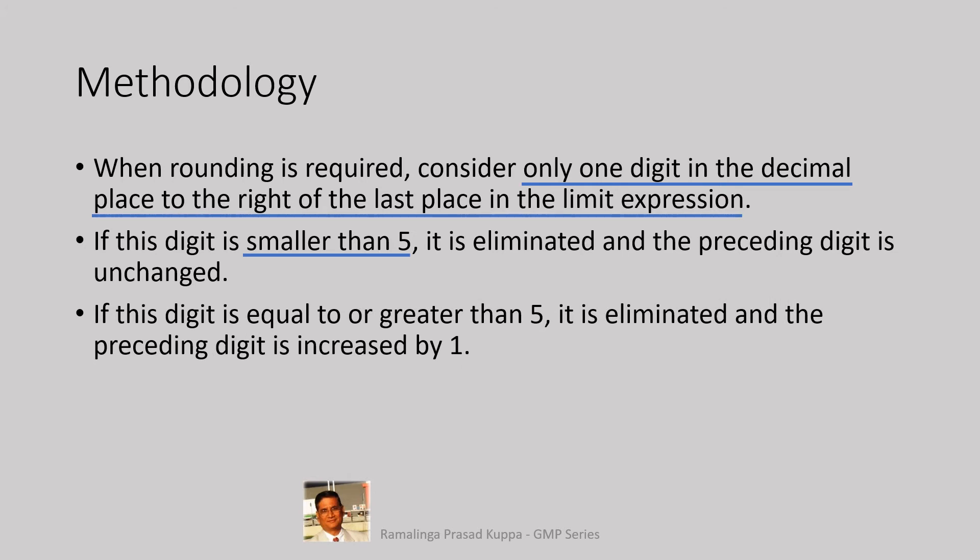If the digit is equal to or greater than 5, it is eliminated and the preceding digit is increased by 1. Similarly, if you have to pay 999, you would pay the same 1,000 rupees. The last digit 9 is rounded off to the next number 1,000. This is as simple as to understand this way.